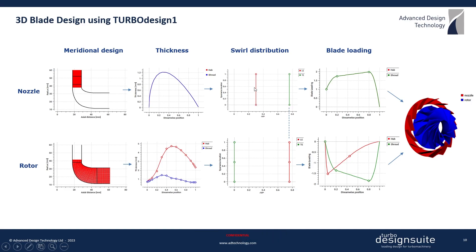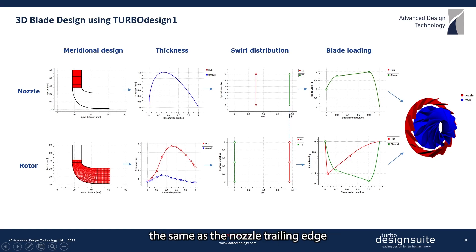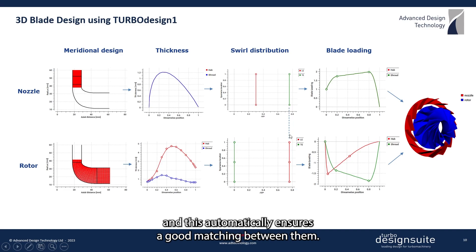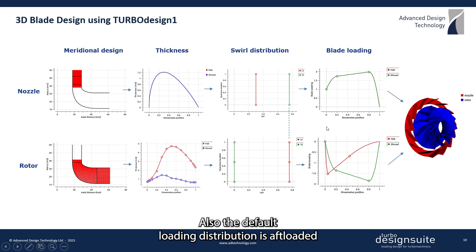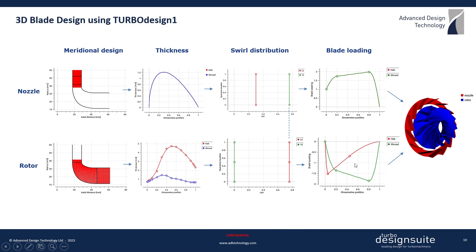As we can see here, the RBT star at the rotor leading edge is kept the same as the nozzle trailing edge, and this automatically ensures a good matching between them. The default loading distribution is half-loaded for the nozzle, and for the space line rotor it is all loaded at the hub.